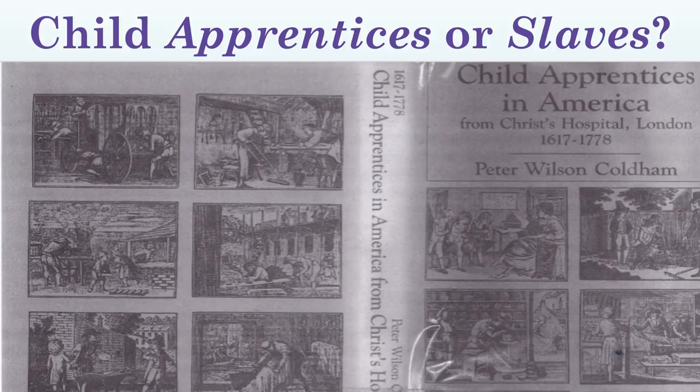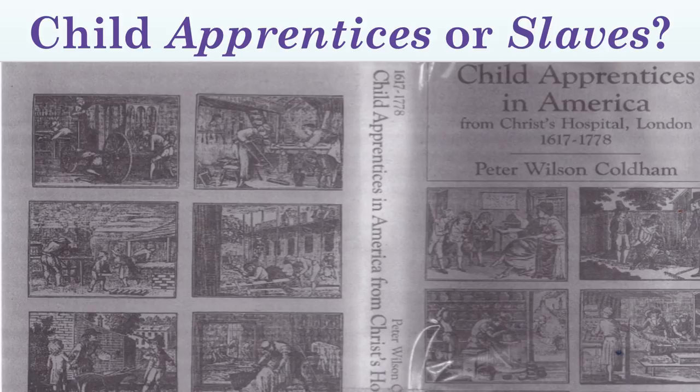We're going to look at the dynamic of child apprentices — or child slaves, as they were identified as child apprentices. This is from Christ Hospital in London from 1617 to 1778. Some individuals might say these were indentured servants or white slavery. However, you have to consider where the children were going — these children were being enslaved and sent to Jamaica, Antigua, Bermuda, and Virginia.